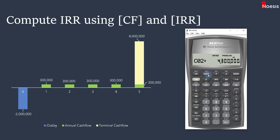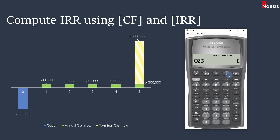Many students make a common mistake by entering 5 as F01. If you enter 5 for F01 and then 4 million for C02, the calculator will interpret that as 300,000 per year for five years and then a 4 million cash flow in year six — which is incorrect. Be very careful when using the cash flow worksheet. The correct entry is F01 equals 4 and C02 equals 4.3 million. Make sure F02 is one and there are no further cash flows.